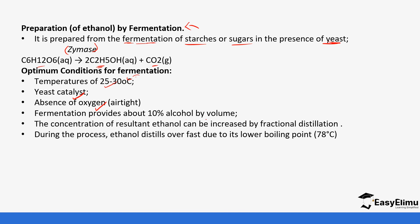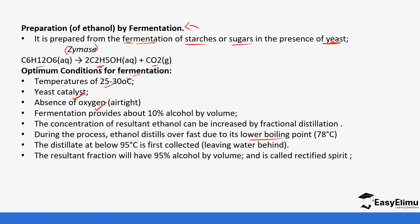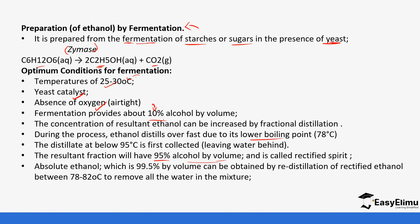During distillation, ethanol distils first because it has a low boiling point. The distillate collected below 95 degrees Celsius leaves water behind, and the resulting fraction will have around 95 percent alcohol by volume. This method may not be economical if you want to produce large quantities of ethanol. Absolute ethanol, which is around 99.5 percent by volume, may be obtained by redistilling the refined ethanol to remove more water.